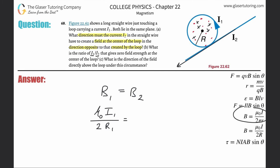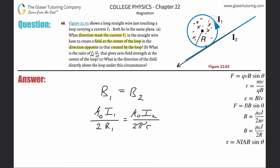The radius R of the loop is the same as the distance between the center of the loop and the straight wire, since the wire just touches the loop. So we can replace both distance variables with capital R. Now μ₀ cancels from both sides, the factor of 2 cancels, and R cancels, leaving us with I1 = I2 / π.